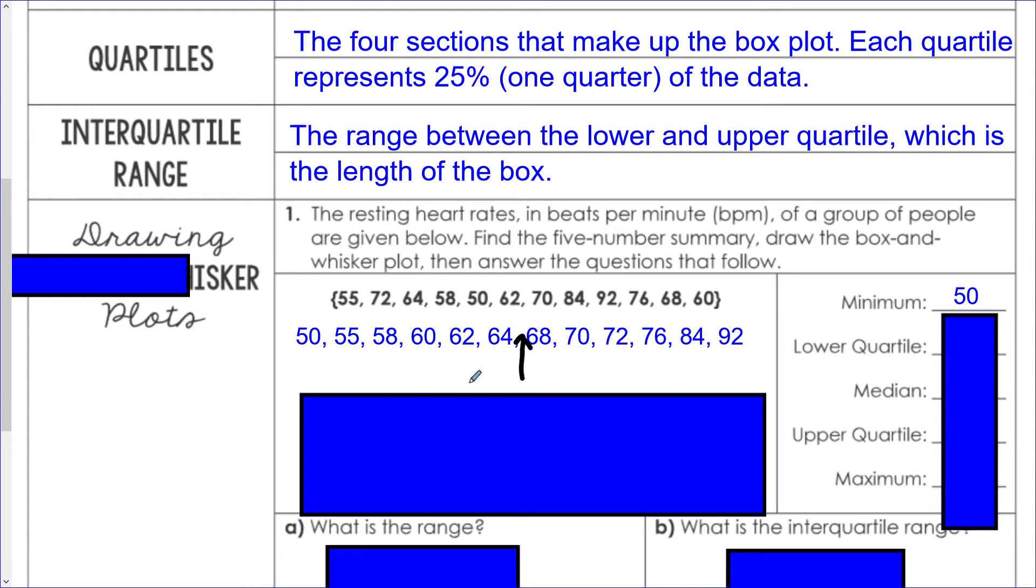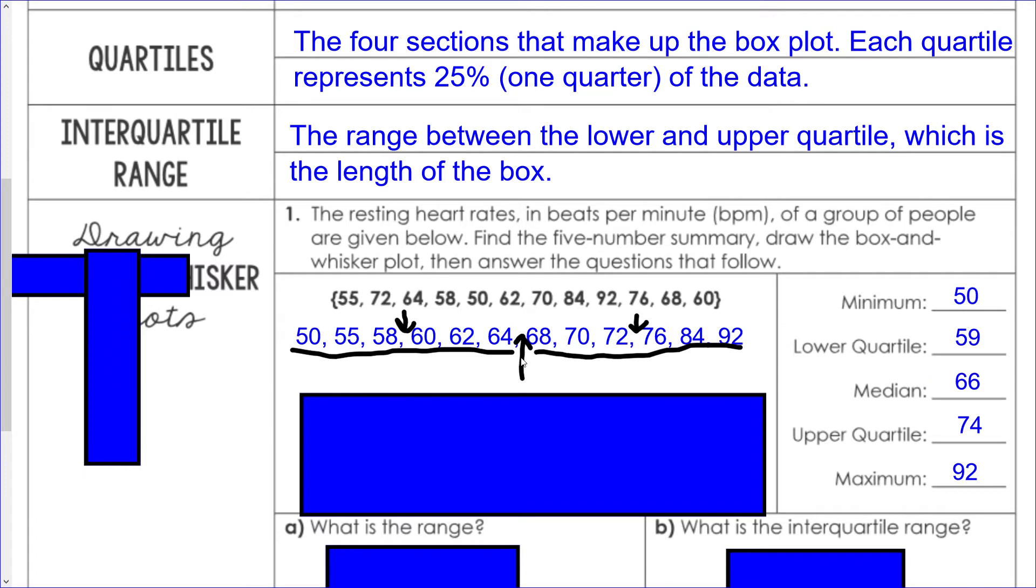Our lower quartile is the median of the bottom six numbers only, which means we want the number between 58 and 60, which is 59. The upper quartile is the median of those six numbers only, so that's 74, right in there. The maximum was 92.